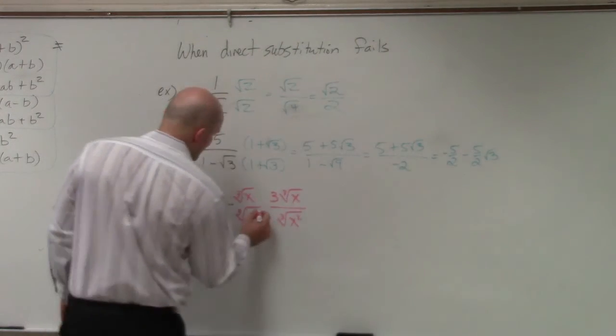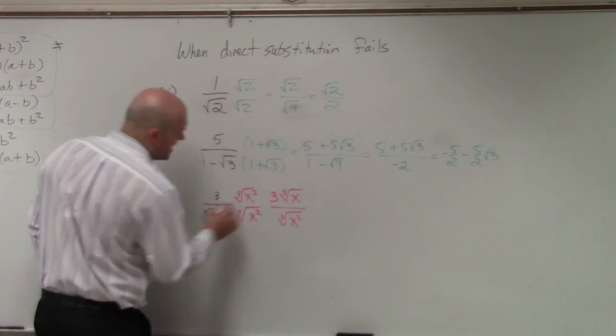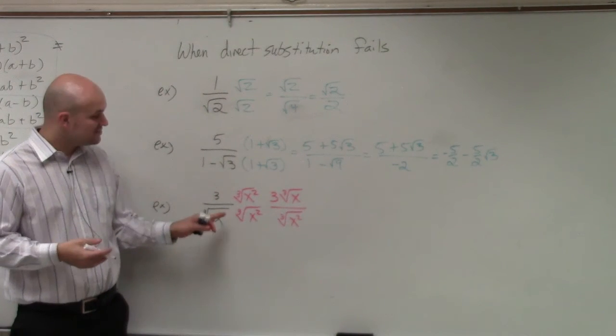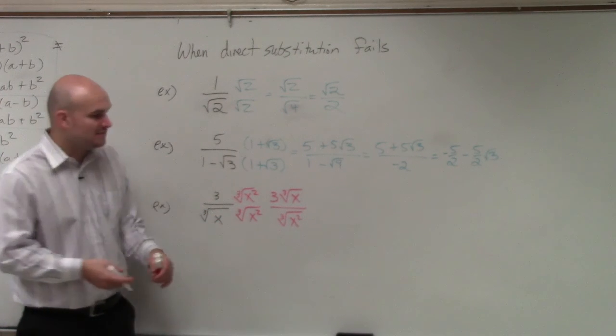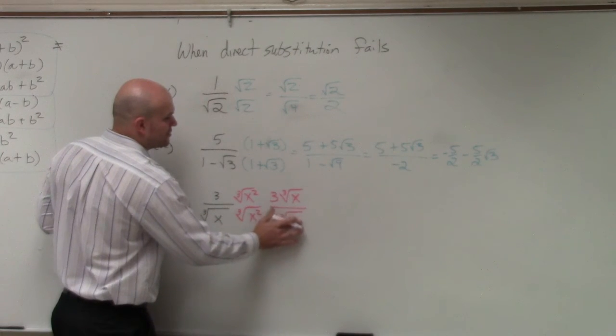So therefore, what I need to multiply by is the cube root of x squared. Because when you multiply x times x squared, you now obtain x cubed.